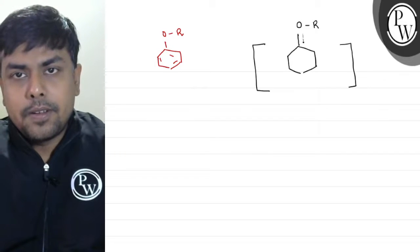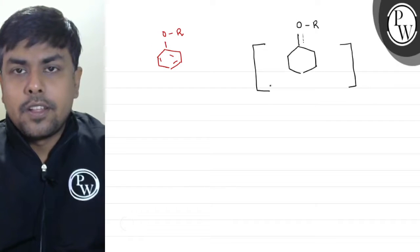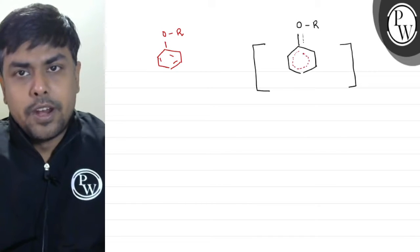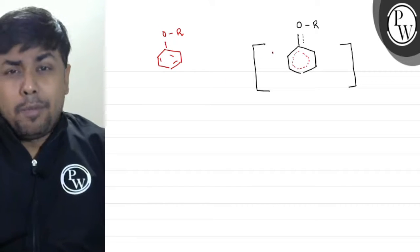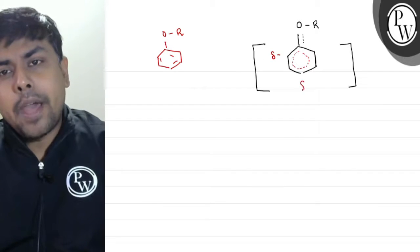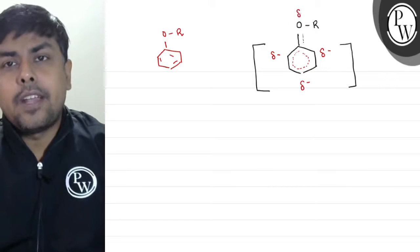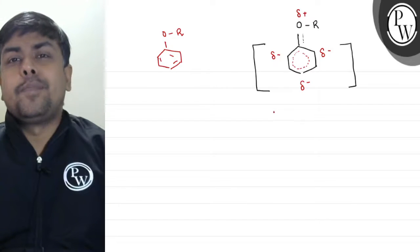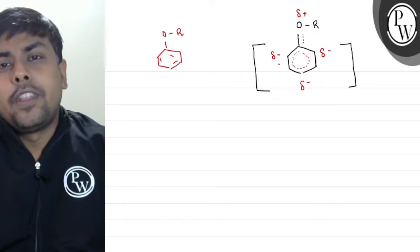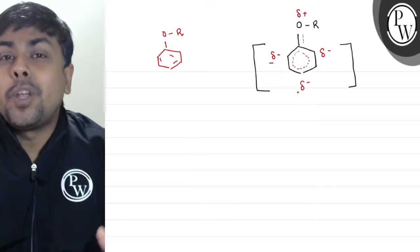And then we have double bond character thoroughly distributed across the ring. In the resonance hybrid structure, we have a partial negative charge, and this negative charge is present at the ortho and para positions, with a partial positive charge on oxygen.